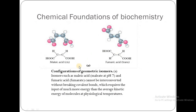The configuration of geometric isomers such as maleic acid at pH 7 and fumaric acid (fumarate) cannot be interconverted without breaking covalent bonds. This is the same principle we discussed: we can only interconvert these isomers when we break the covalent bonds.